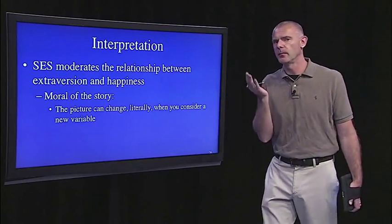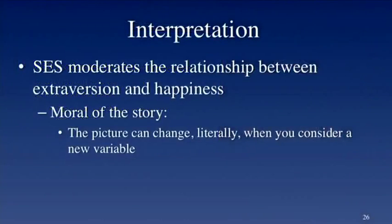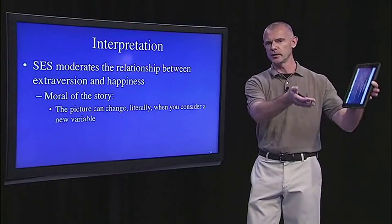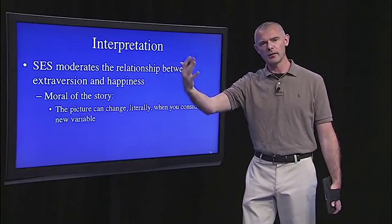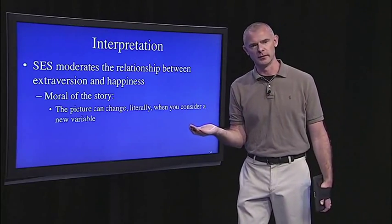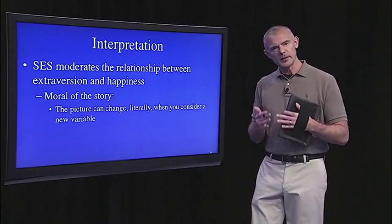Again, this is a simple example, very easy interpretation. All we've demonstrated is that SES moderates the relationship between extraversion and happiness. And the moral of the story to take away from moderation analyses is an important one. The picture can change literally when you add a new variable. So you might think there's a strong correlation between X and Y. But wait, we didn't consider this third variable. Now you consider that third variable, and the context changes, and the relationship changes completely. That's always possible when you're doing these types of studies. And that's one of the limitations of these kinds of observational studies.